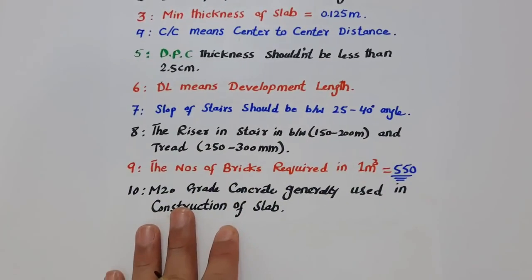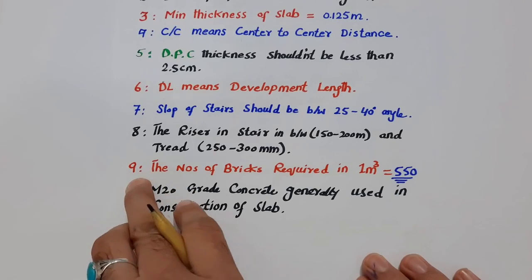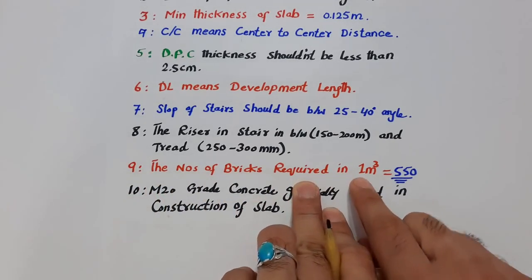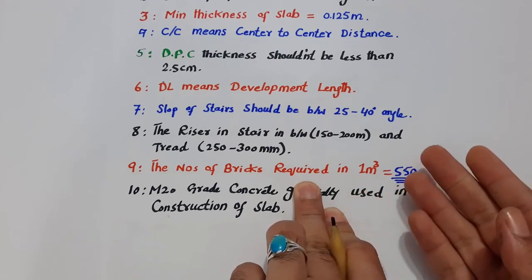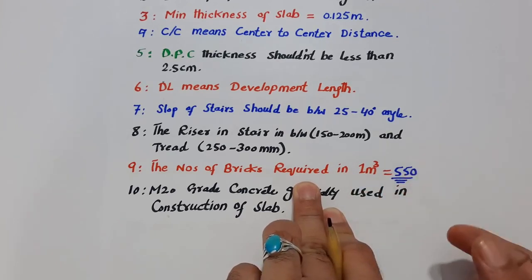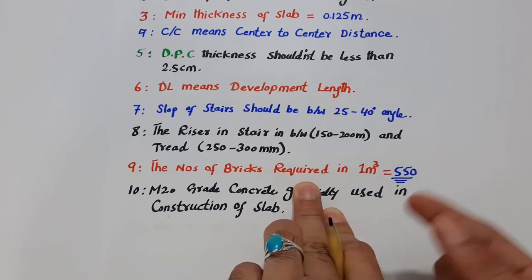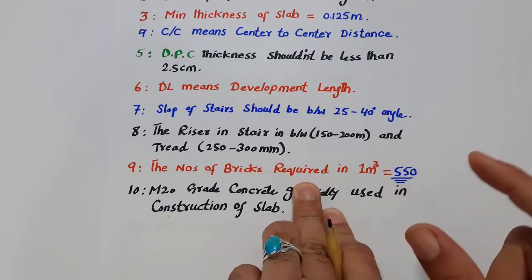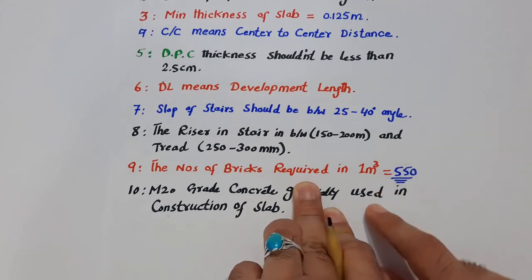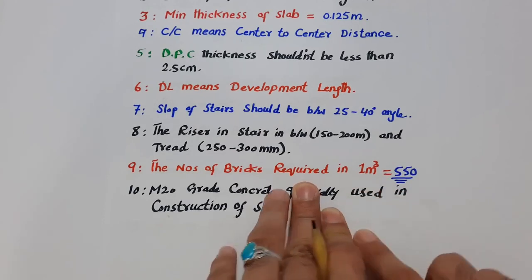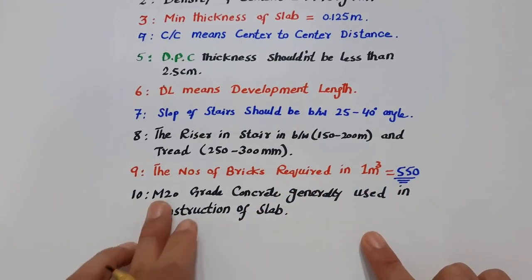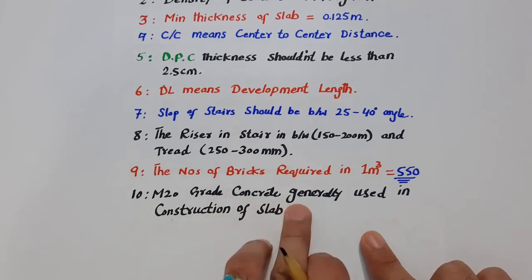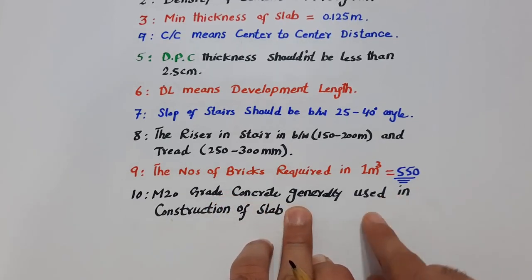The ninth one is the number of bricks required in one cubic meter. If anyone asks how many bricks are needed in one meter cube, the answer is 550 numbers of bricks per cubic meter.